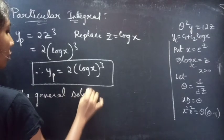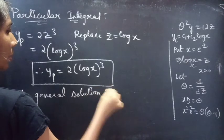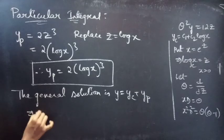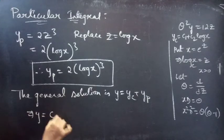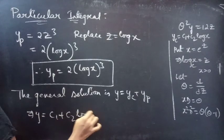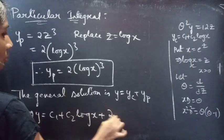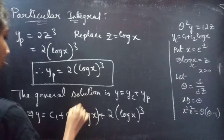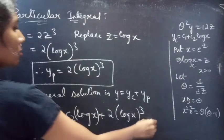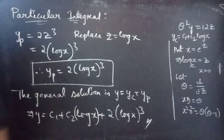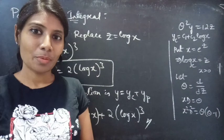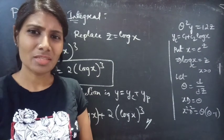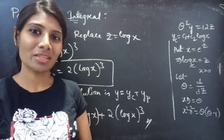The general solution is given by y = yc + yp. Therefore y = c₁ + c₂·log(x) + 2·(log x)³. This is our required solution. We have seen a problem from higher order linear differential equations with variable coefficients in this video. Hope you understand — see you in the next video, until then bye bye.